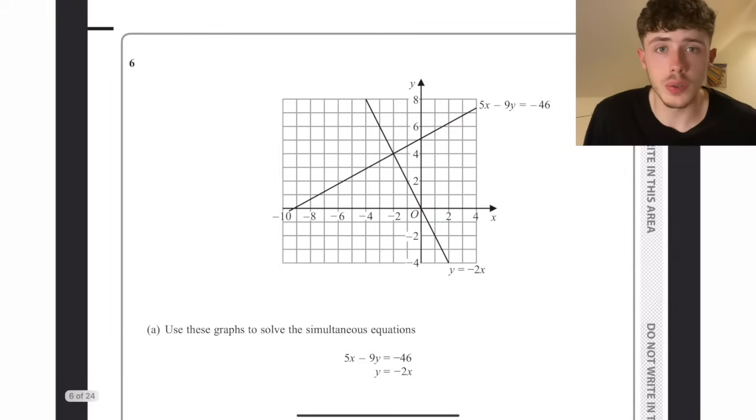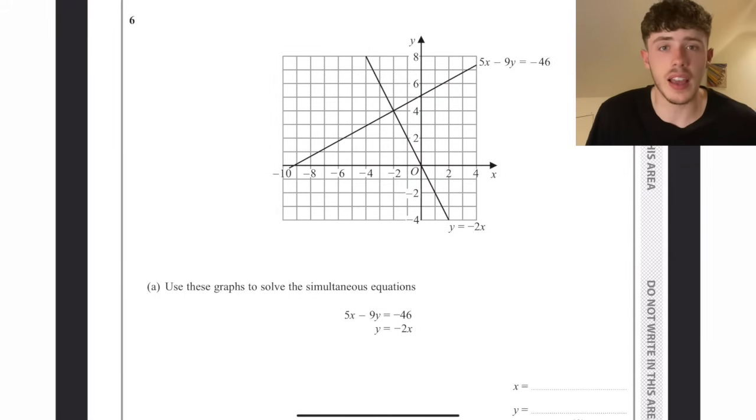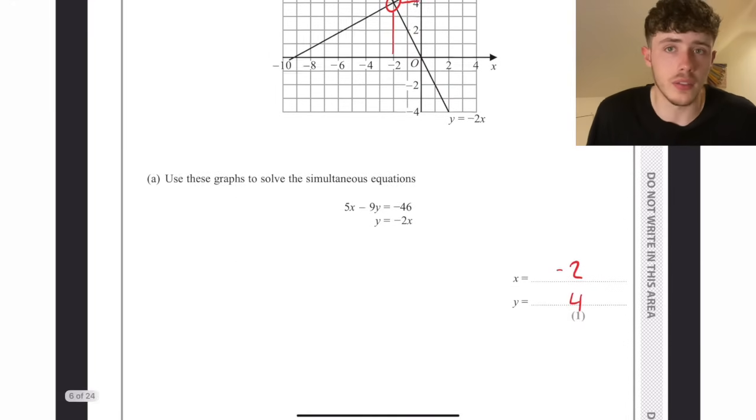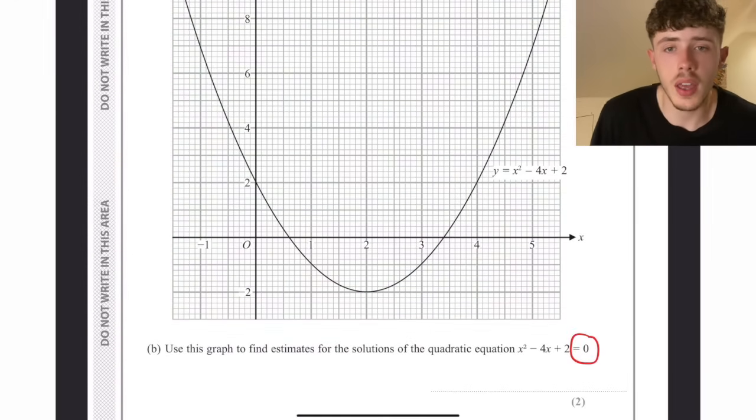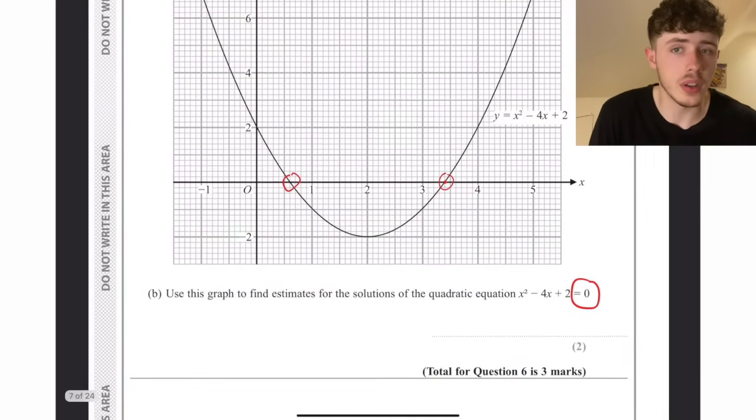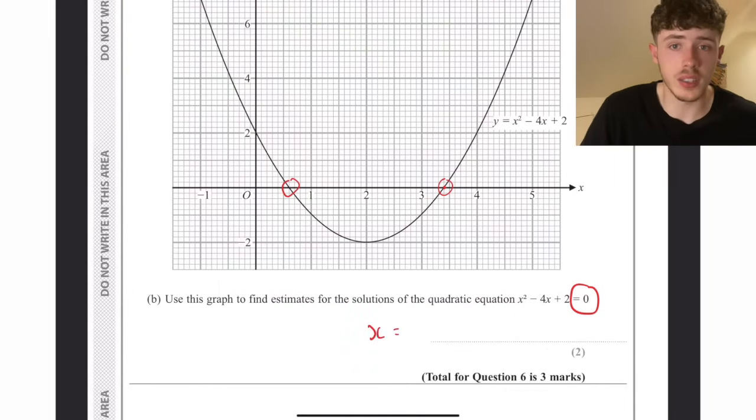Solving simultaneous equations using a graph is the easiest thing and you should definitely get marks on this. It is literally the coordinate where they intersect each other, so here minus two and four. The same with the roots. When it equals zero, we find where it intercepts the x-axis because that's where the y-coordinate is zero. The x values here are 3.4 and 0.6.